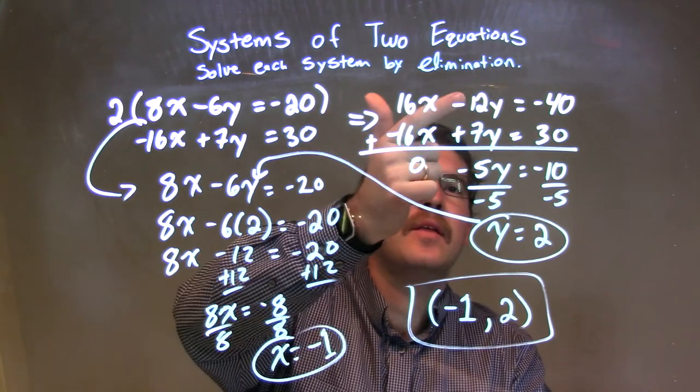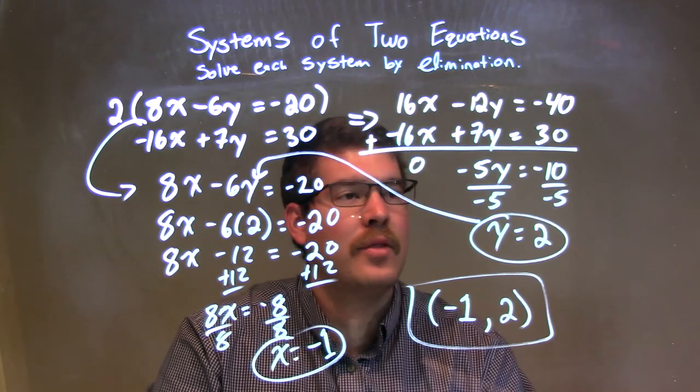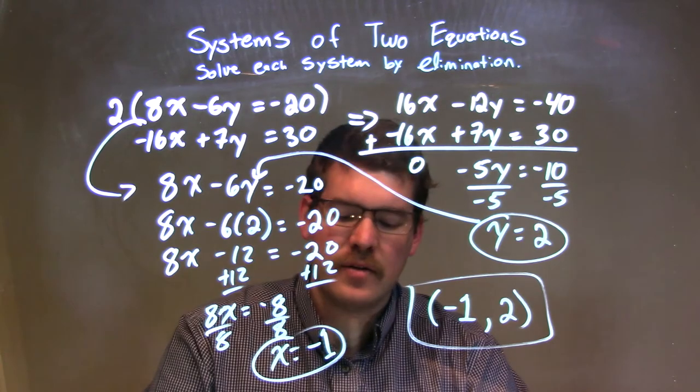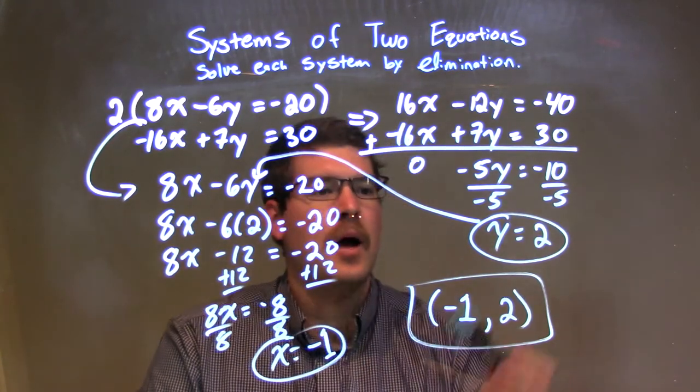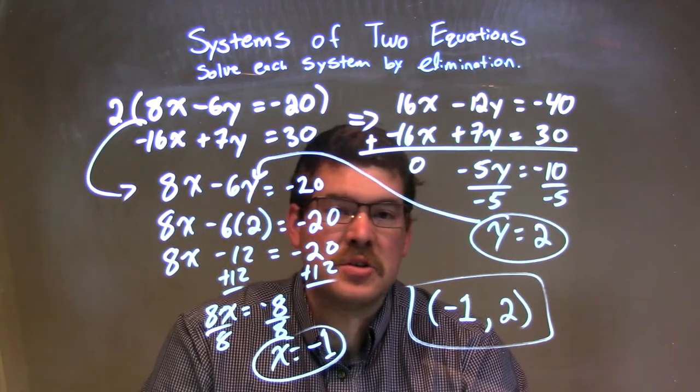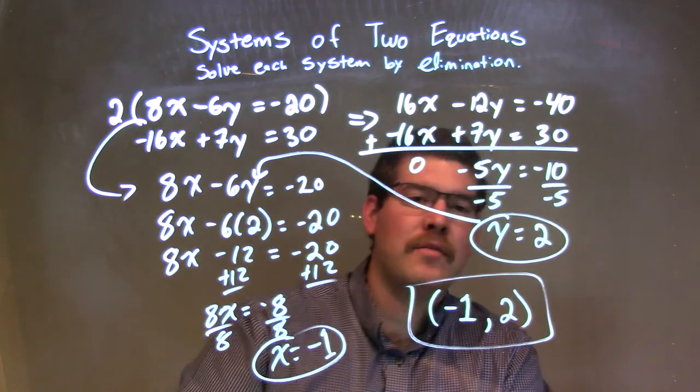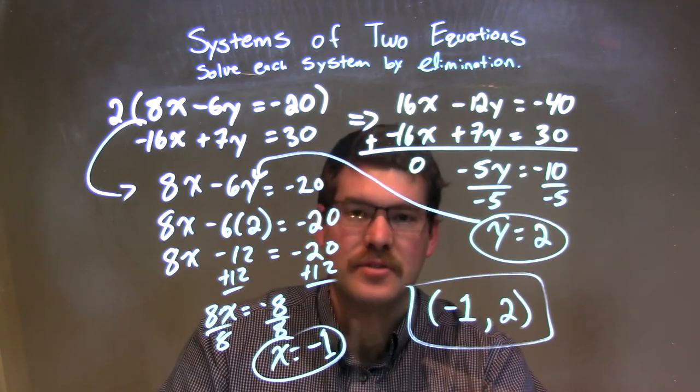When I add them, that happened. Then negative 12y and 7y became a negative 5y. And negative 40 and 30 become a negative 10. I then divided by a negative 5 to both sides, giving me y by itself. And it's equal to a positive 2. I plugged that y equals 2 into the first equation and simplified and eventually got x to be a negative 1. I have my x value and my y value together. They come together to have a coordinate point, which is negative 1 comma 2.